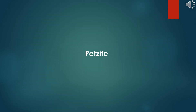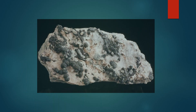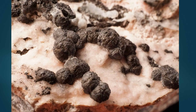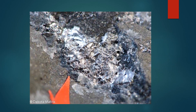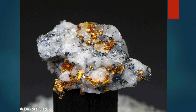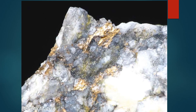Petzite is a type of gold ore belonging to the telluride mineral group, containing both gold and silver with the chemical formula Ag₃AuTe₂. It is a rare and valuable mineral in the precious metals mining industry. Petzite typically appears in dark grey or steel grey with a distinctive metallic luster. It has a hardness of 2.5 to 3 on the Mohs scale, making it relatively soft.